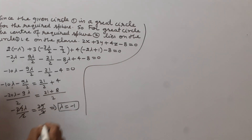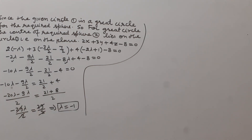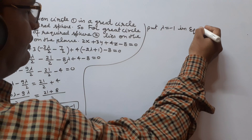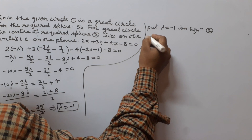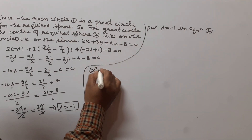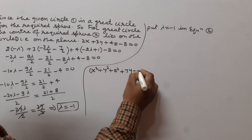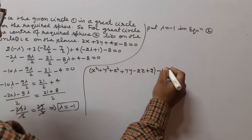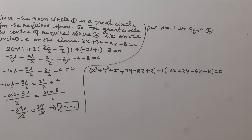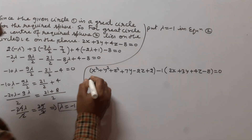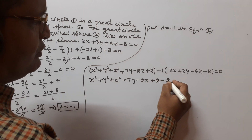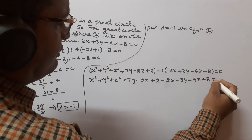Now we substitute λ = -1 into the equation of sphere 2. So: x² + y² + z² + 7y - 2z + 2 + (-1)(2x + 3y + 4z - 8) = 0, which gives x² + y² + z² + 7y - 2z + 2 - 2x - 3y - 4z + 8 = 0.